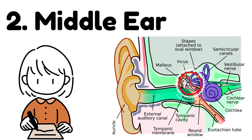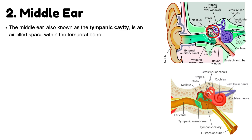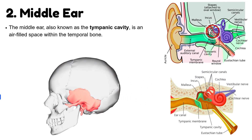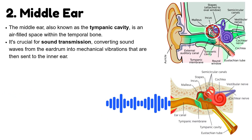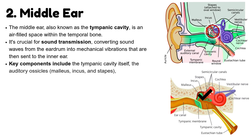The second part of the ear is the middle ear. The middle ear, also known as the tympanic cavity, is an air-filled space within the temporal bone. It's crucial for sound transmission, converting sound waves from the eardrum into mechanical vibrations that are then sent to the inner ear. Key components include the tympanic cavity, the auditory ossicles — malleus, incus, and stapes — and the eustachian tube.